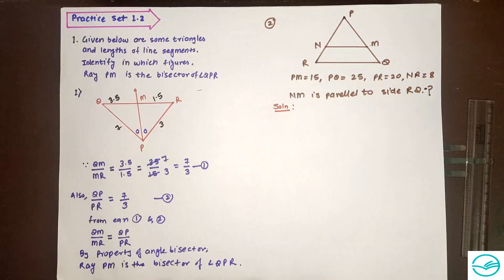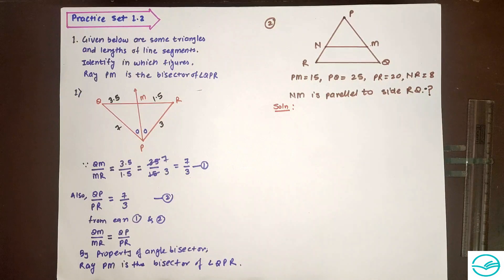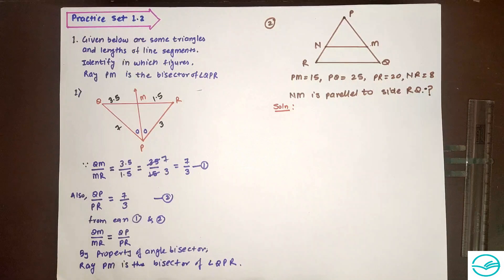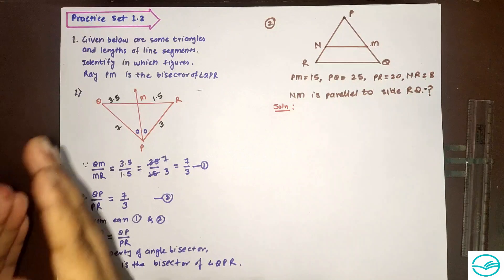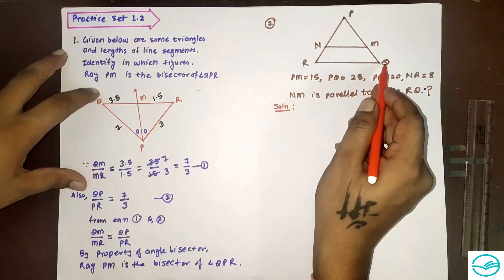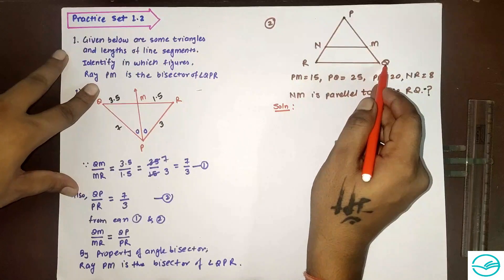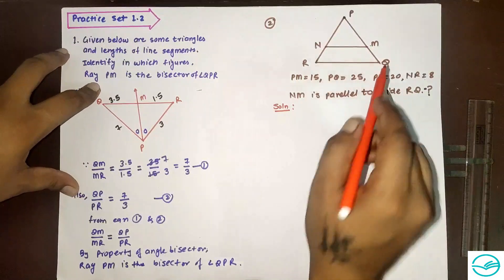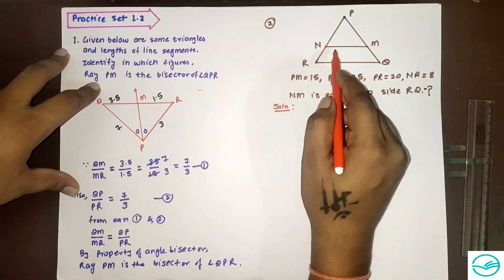To check if NM is parallel to RQ, we apply the converse of the basic proportionality theorem. If NM is parallel to RQ, then by the converse of basic proportionality theorem, the ratio PN to NR should equal the ratio PM to MQ.